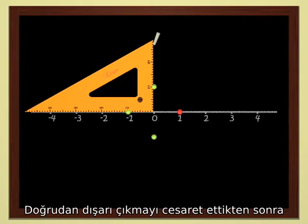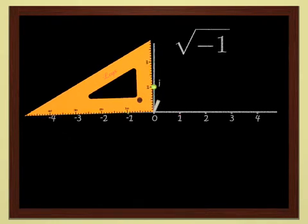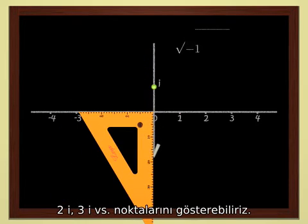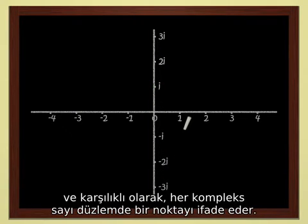And mathematicians denote it by i. But once we have the courage to leave the line, everything else is easy. We can represent 2i, 3i, and so on. Each point in the plane represents a complex number, and conversely, each complex number defines a point in the plane.